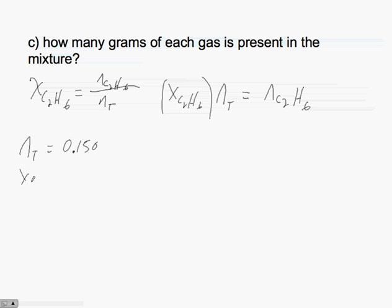And from part A of the equation, we were able to determine our mole fraction, which is C2H6, which in this instance was 0.423. So if we take 0.423, multiply that times 0.150, this here would tell us the number of moles of ethane we have, which would be 0.0635 moles.